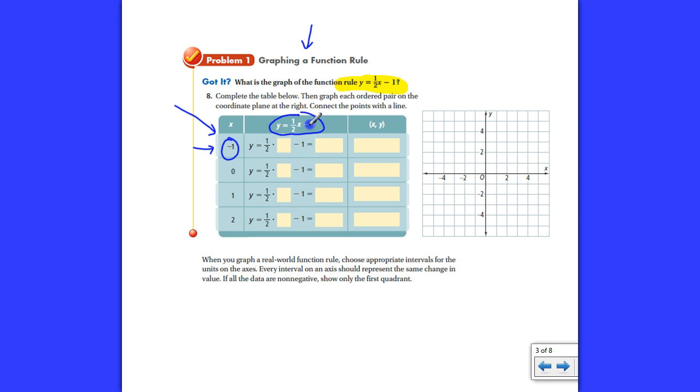y is equal to one-half x minus one. So, we're going to plug negative one in there, and we are going to work that problem out. So, you're going to have negative one-half minus one, and that works out to be negative 1.5. You can double-check by math, and that gives us an ordered pair of negative one, comma, negative 1.5.